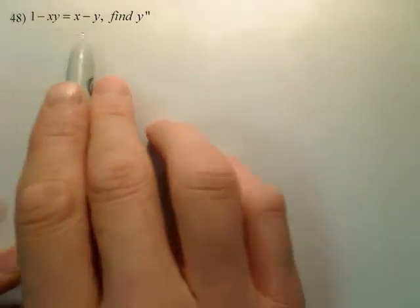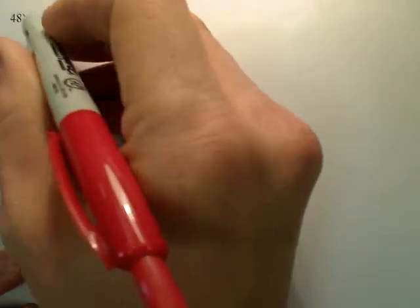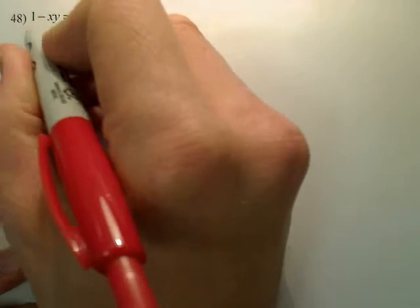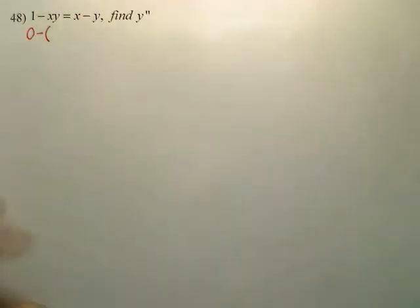Alright, to derive this implicitly, we're taking the second derivative. We're going to derive it implicitly, derive everything where it's at. So the derivative of 1 is nothing, so you can put 0 if you want, or ignore it. You can put minus, or you can bring that as a negative 1 through the whole thing.